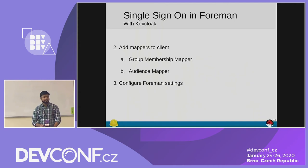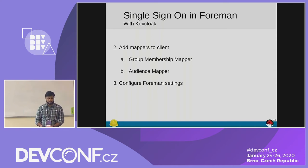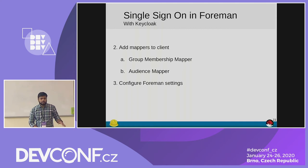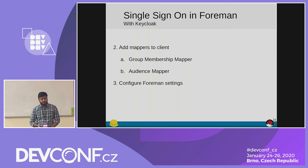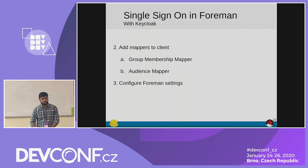The next thing you need to do is add the mappers. The first mapper is the group membership mapper, which tells Keycloak that you have this user group — like a DevConf attendee — and you have these permissions. That data will get transferred to your token. And last, you need to do some configurations in Foreman so that Foreman can validate some things on the application side.